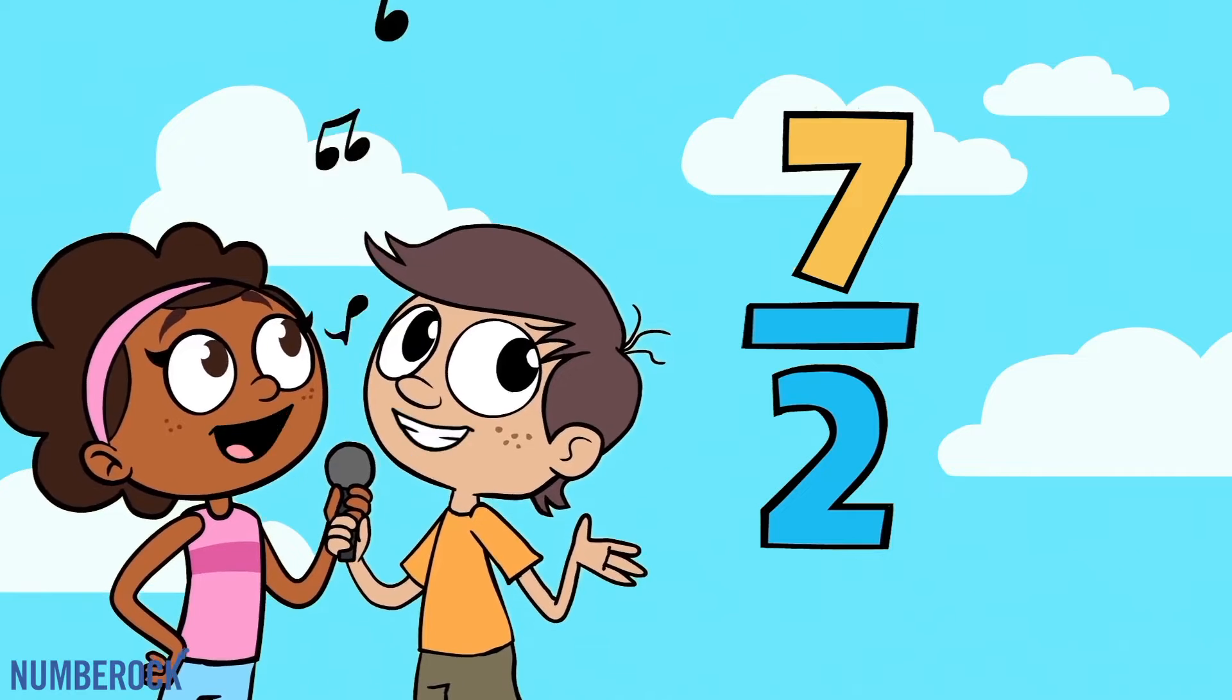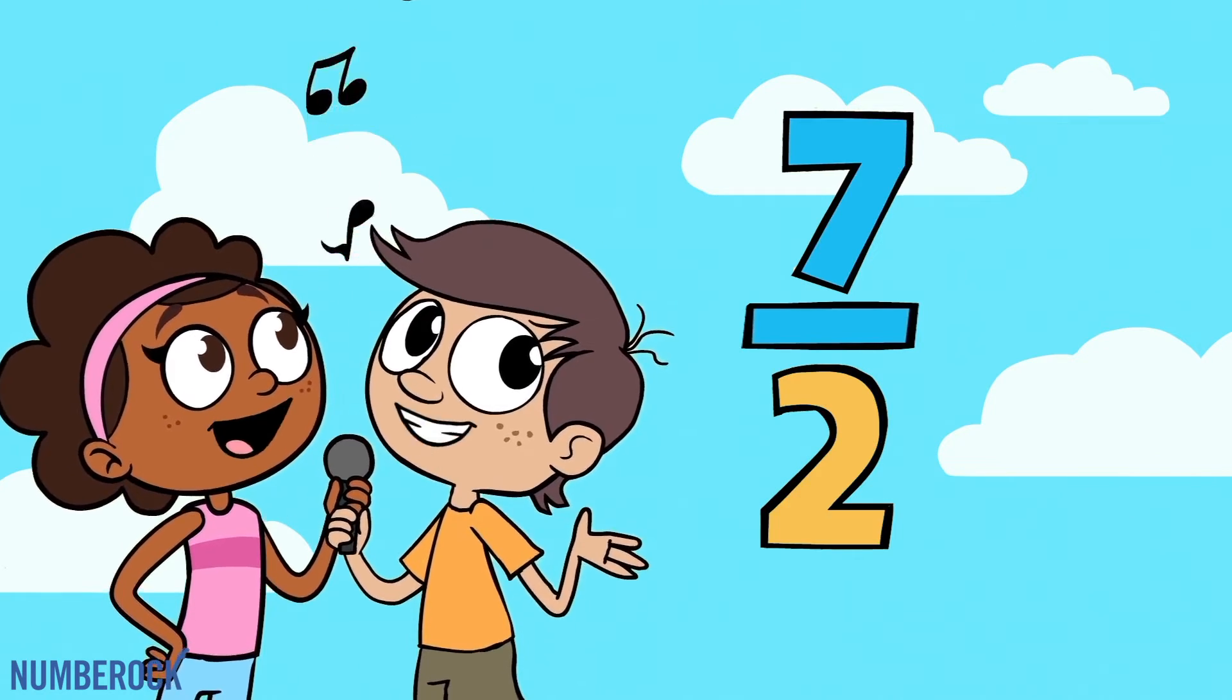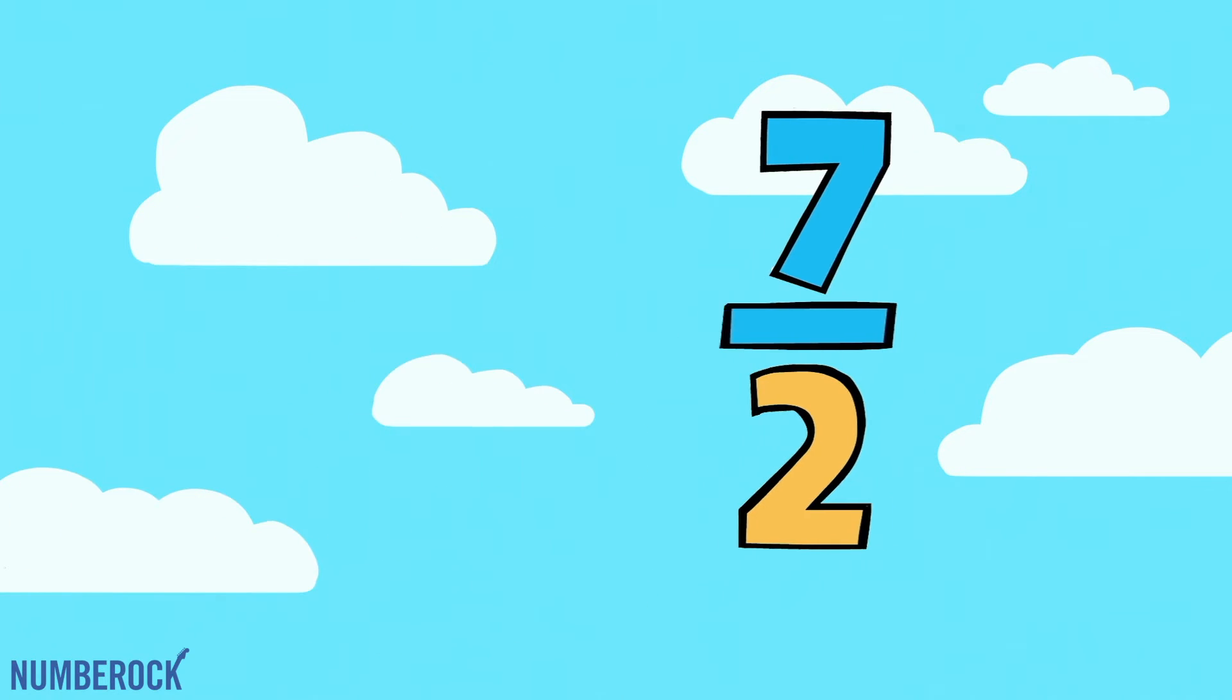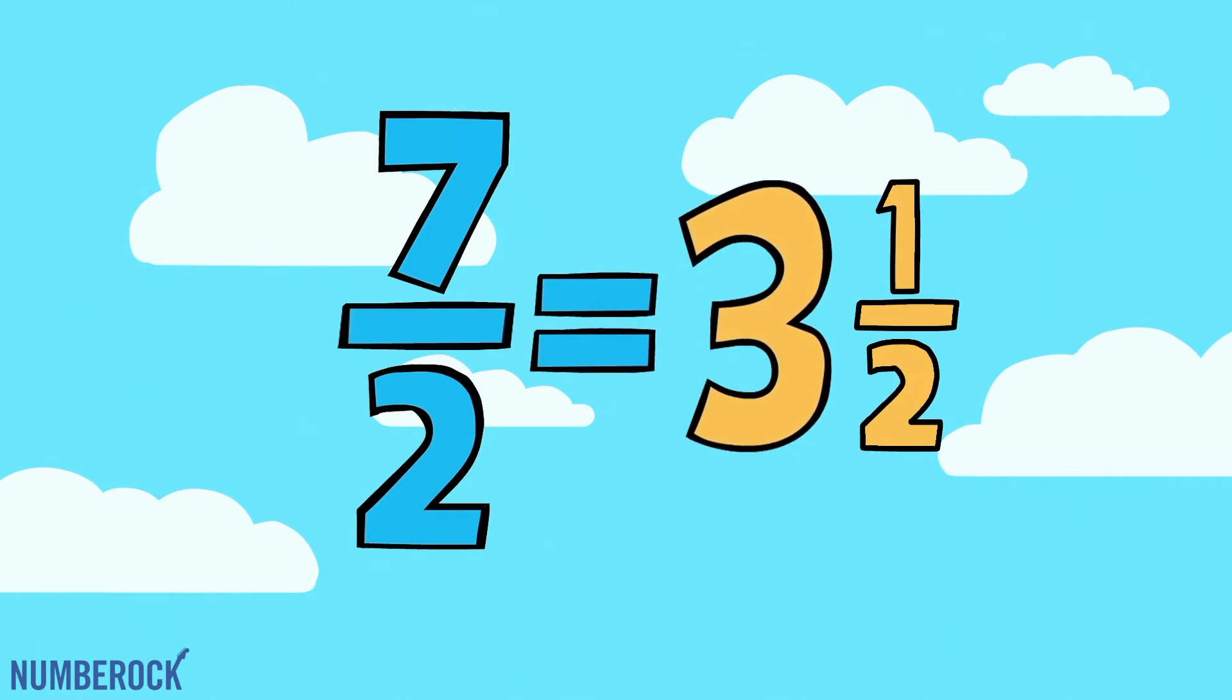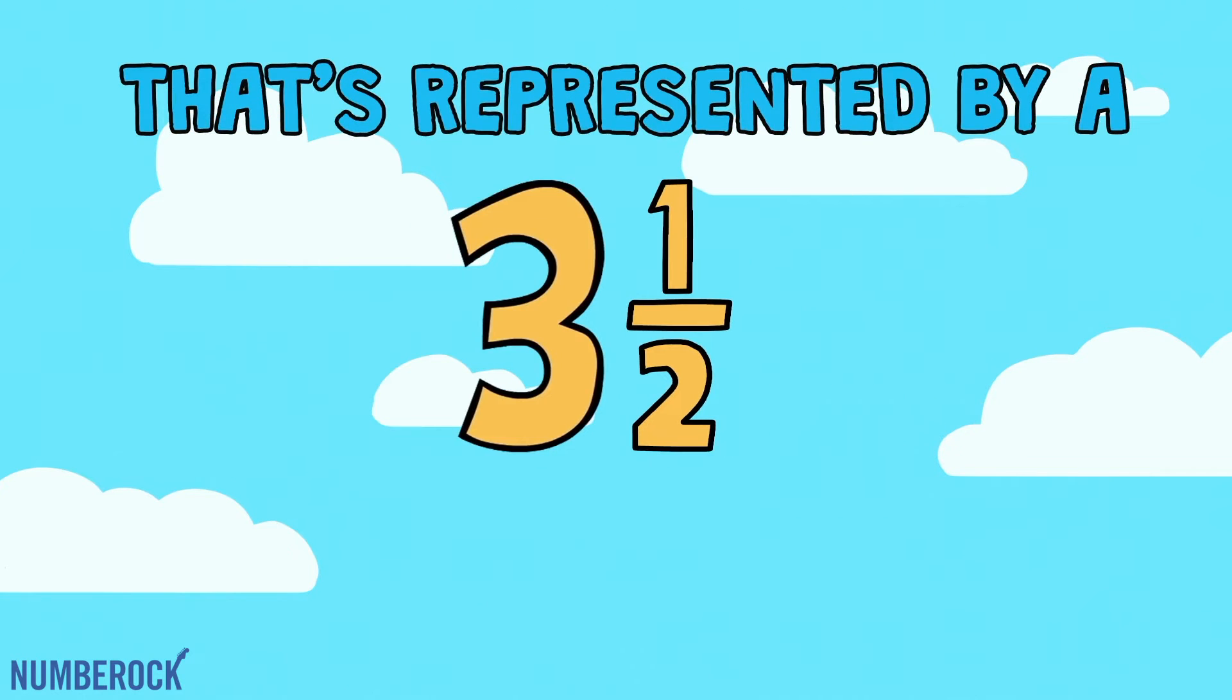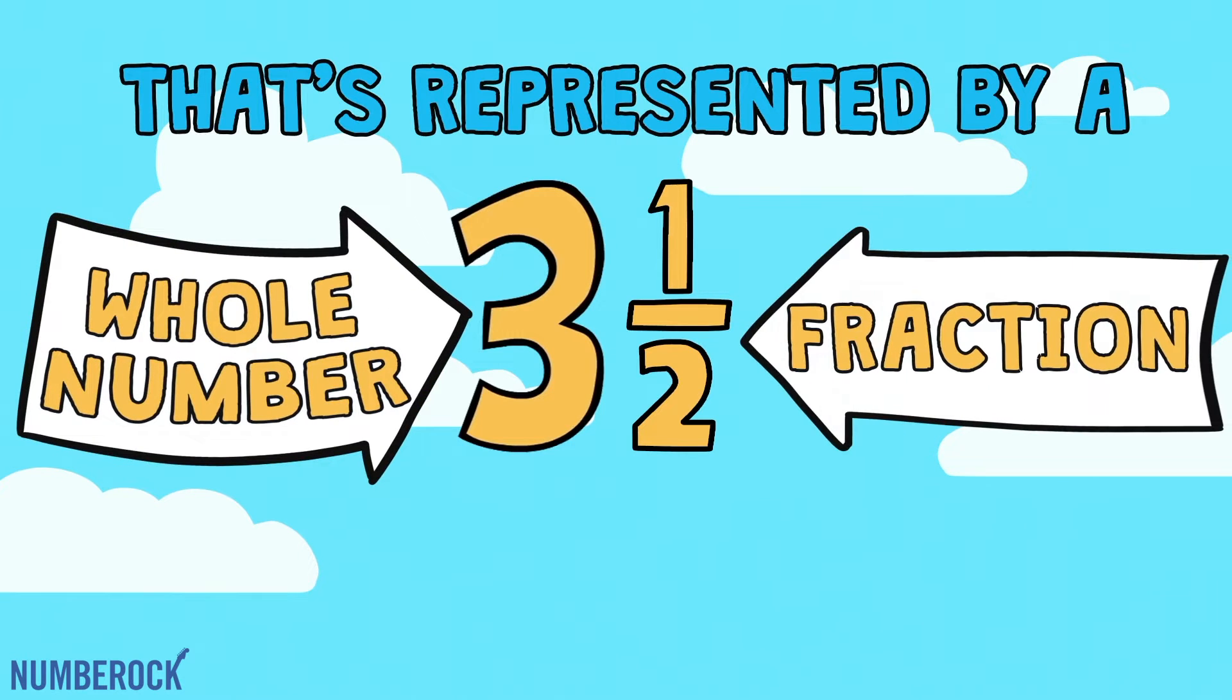An improper fraction has a numerator that's greater than or equal to the denominator. A mixed number has a value that is greater than one that's represented by a whole number and a fraction.